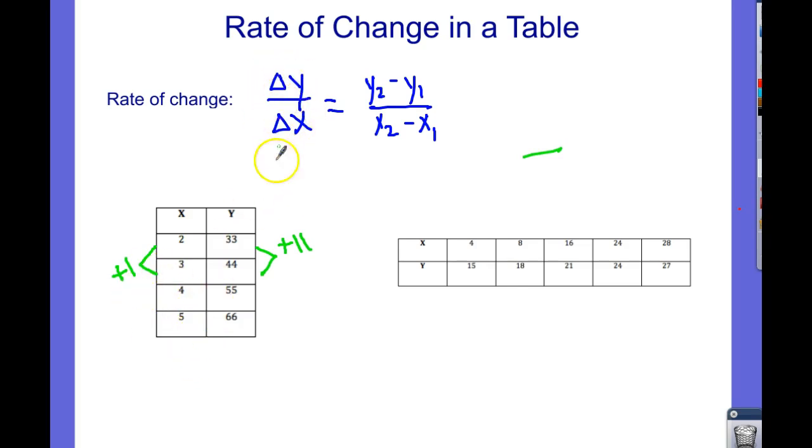So then if I'm looking at change in y over change in x, it's going to be 11 over 1. And then I can just do that. Divide 11 by 1. That's of course just 11. So the rate of change for this table is 11.